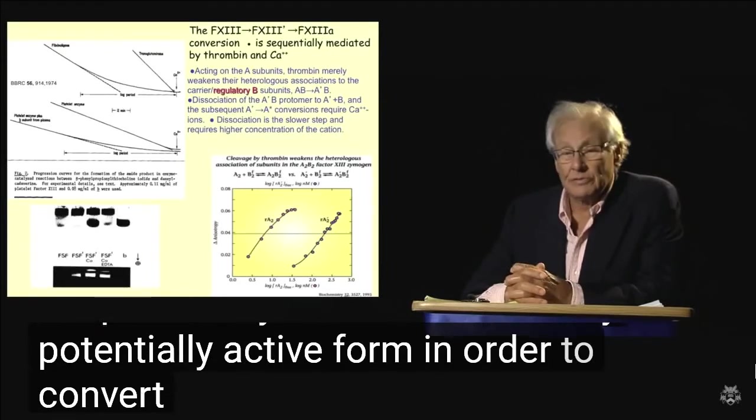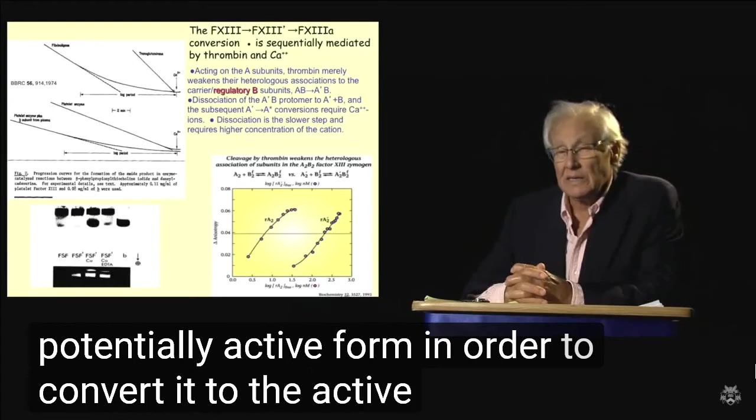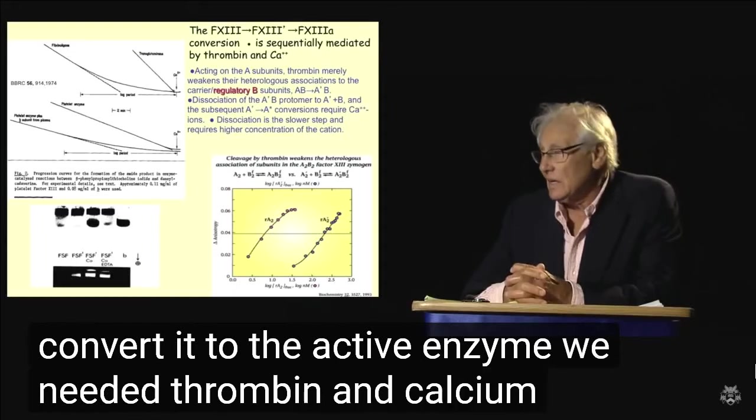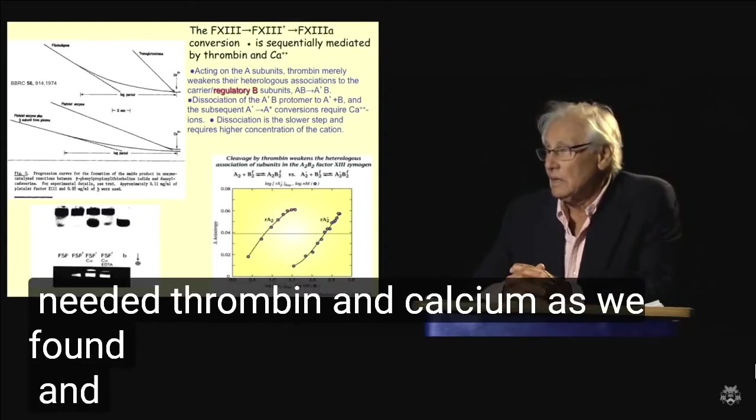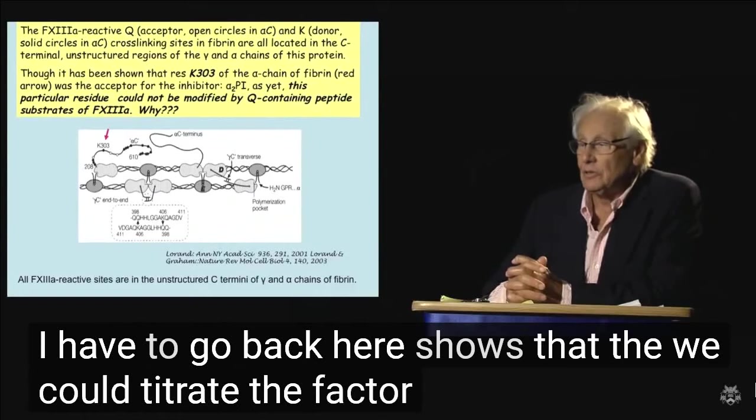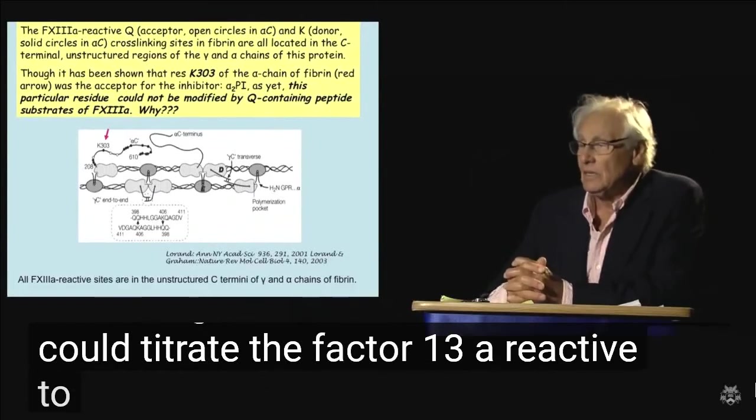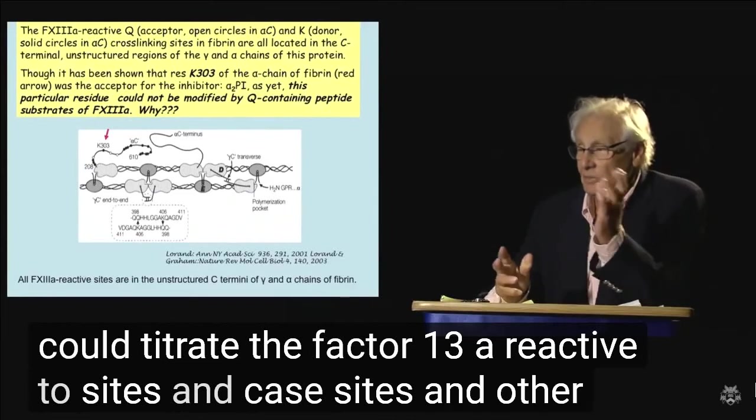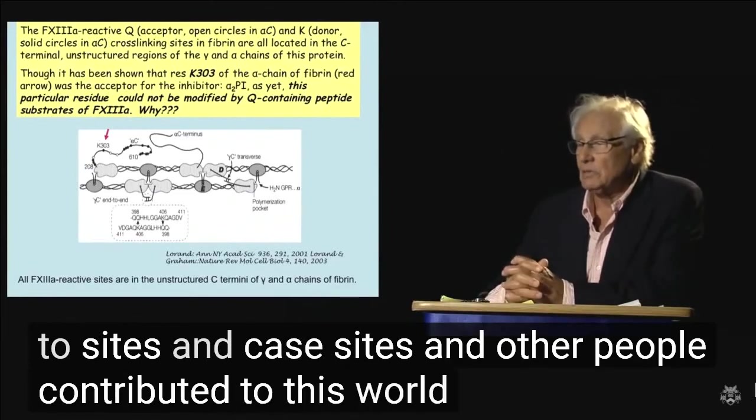In order to convert it to the active enzyme, we needed thrombin and calcium, as we found. We could titrate the factor 13 A reactive Q sites and K sites, and other people contributed to this work too.